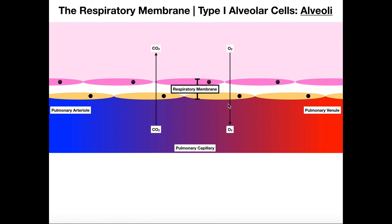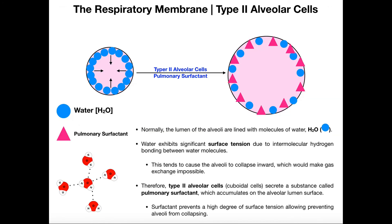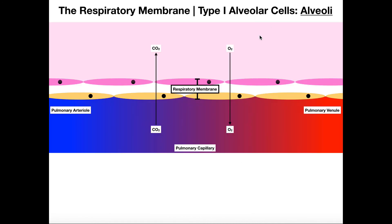The simple squamous cells making up the walls of the capillary, and the simple squamous cells making up the wall of the alveolus, are collectively called the respiratory membrane. It gets this special name because it's not often that we have two simple squamous epithelial layers in close juxtaposition to one another. Because of this setup — form follows function — thin cells, even though it's two layers, allow very efficient gas exchange. The simple squamous cells lining the alveoli have a special name: they're called type 1 alveolar cells. There's also a type 2 alveolar cell with a completely different function that we'll discuss in the next video. These type 1 cells that participate in gas exchange, being so thin and simple squamous, together with the simple squamous lining of the capillaries, make up the respiratory membrane.